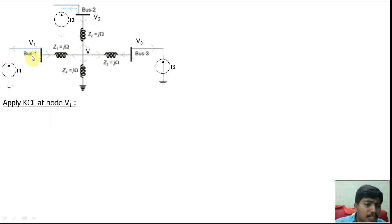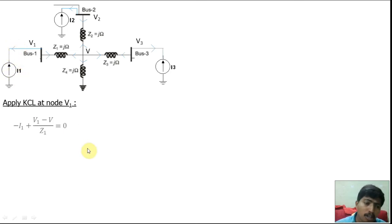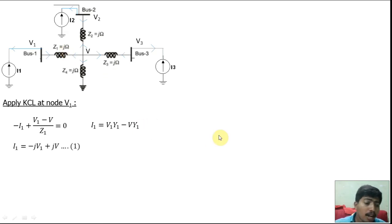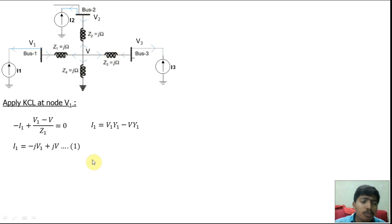Assume current flows out from the node. Apply KCL at node V1: the outgoing currents are the current through Z1 toward V and I1 is incoming (opposite direction), so −I1 + (V1 − V)·Y1 = 0. Simplifying, using Y1 = −j (since Z1 = j), we get I1 = −j·V1 + j·V. But this equation contains the intermediate node voltage V, which is not a bus node variable, so we must eliminate V by applying KCL at node V.